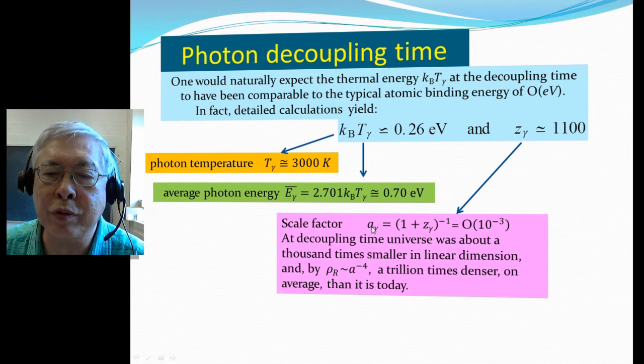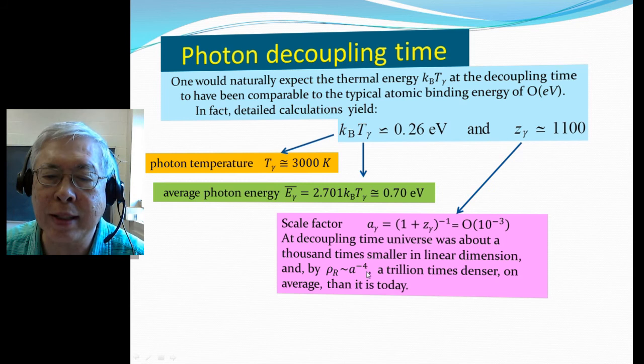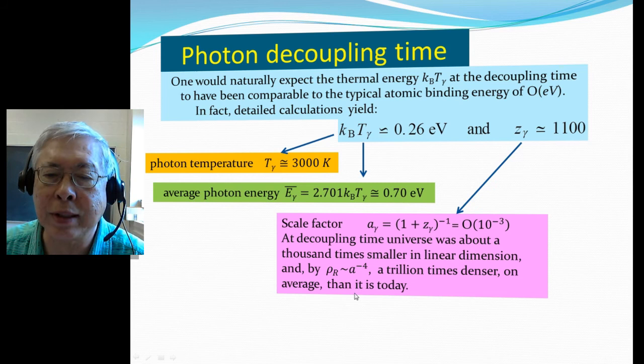Now, knowing the redshift ratio, we can translate this as a scale factor of about 1,000. Therefore, at decoupling the universe was about 1,000 times smaller in linear dimensions. But because radiation goes like A to the minus fourth, it's a trillion times denser on average than today.